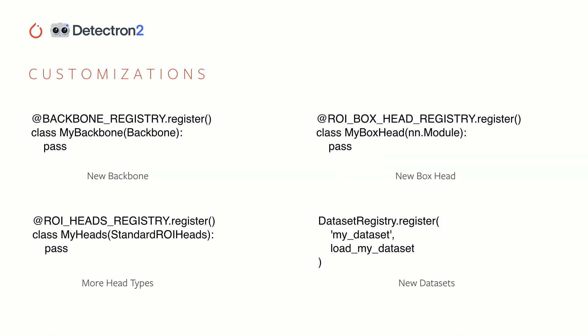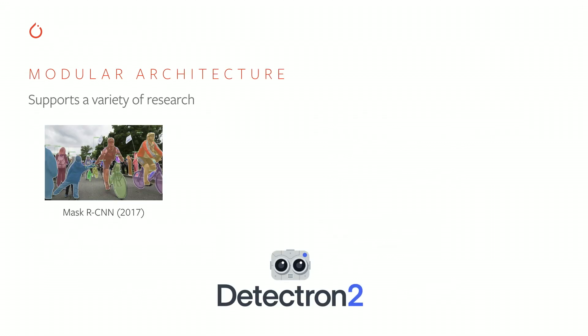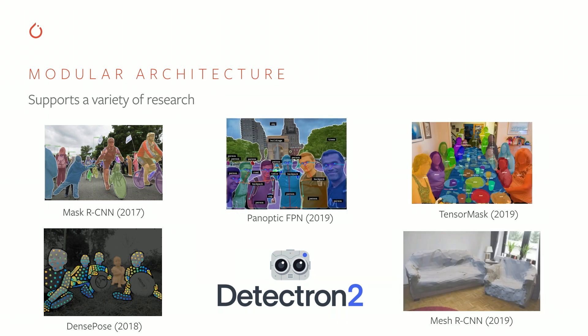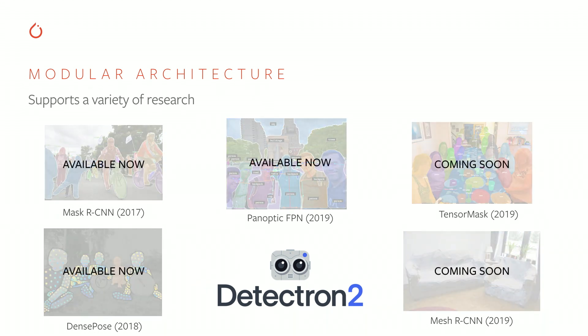This modular design makes it easier to support a variety of research built on top of Detectron 2, in addition to the standard Mask R-CNN model. DensePose, for example, used to be released as a fork of Detectron 1, but now this model can be built on top of Detectron 2 by simply importing it and adding a few extra layers. Some latest research papers from our team, including Panoptic FPN and TensorMask, are also coming together with Detectron 2. Beyond 2D understanding, in a month we will also release source code for Mesh RCNN, which is a model able to predict 3D structures of objects.